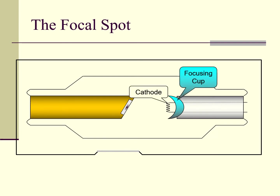First up is the cathode and the focusing cup. The cathode is the projection element for the electron stream that defines the focal spot size. The longer the cathode wire, the larger the focal spot. The focusing cup does what its name implies — it focuses a stream of electrons onto the target.